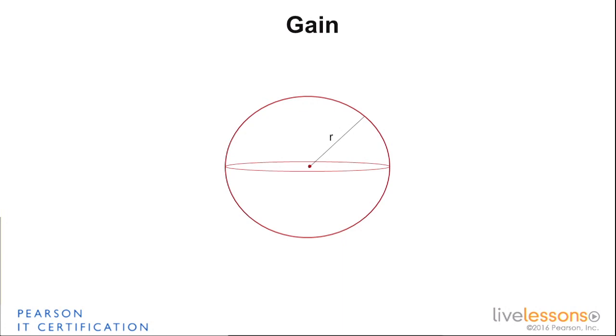As you go farther away, there will be less energy because it will be a larger sphere than if you're close to the antenna. That's the isotropic, but of course it doesn't exist.